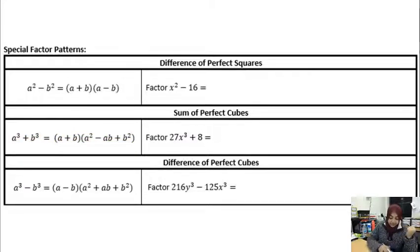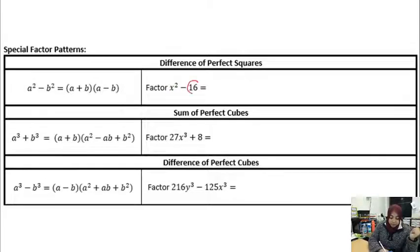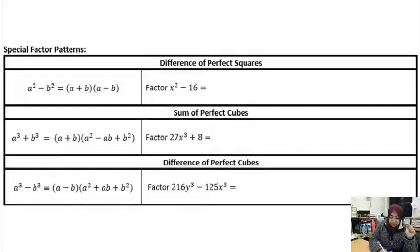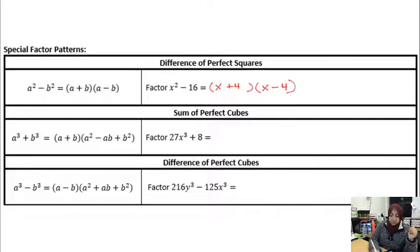When I look at x² − 16, I know it's the difference of perfect squares because x is being squared and 16 is a perfect square. Whenever you have two perfect squares being subtracted, it factors into (x + 4)(x − 4), because the square root of 16 is 4.